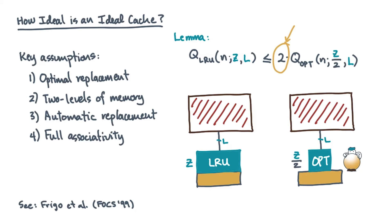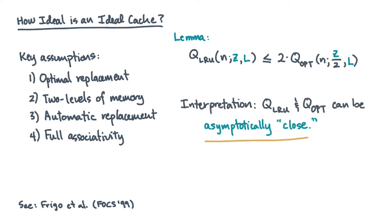But here's a very natural interpretation. Suppose you design an algorithm assuming optimal replacement, which is what we're going to be doing. Then the performance of that algorithm on a more realistic LRU machine will be asymptotically close. In other words, optimal replacement isn't as strong an assumption as you might think.